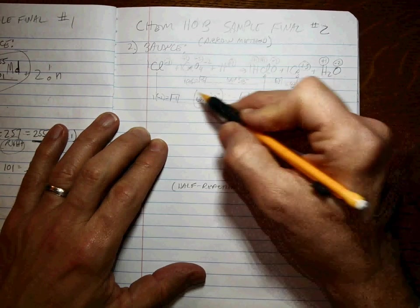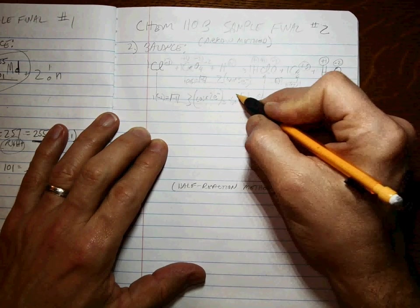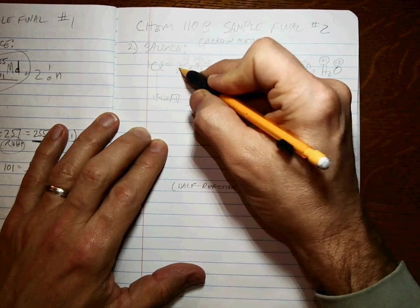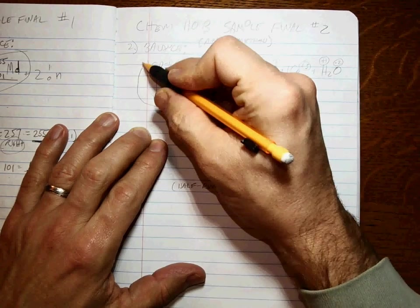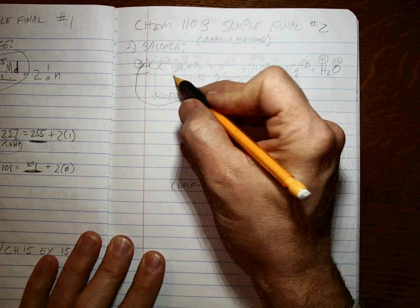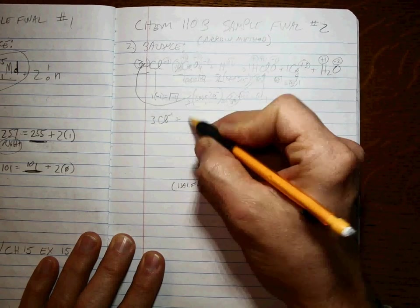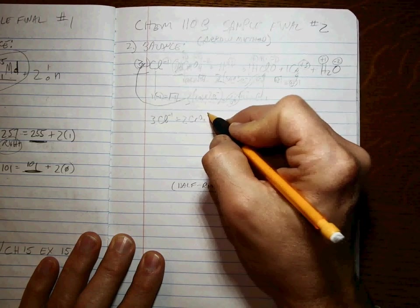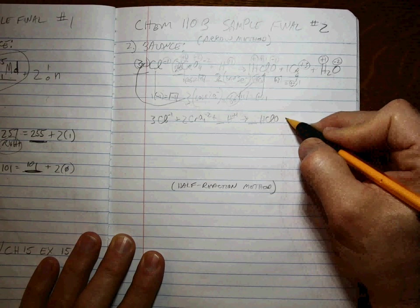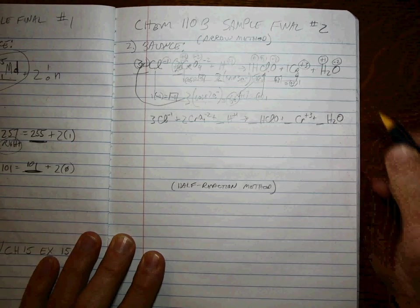You have to find the least common multiple, which is six. So we're going to multiply here by two and multiply here by three. So we end up with losing six and gaining six, which evens out. So this two jumps here and it becomes two times one. This three jumps here and it becomes three times one. So we rewrite three Cl minus ones plus two CrO4 minus twos plus I don't know how many H pluses goes to I don't know how many HClOs plus I don't know how many Cr plus threes.